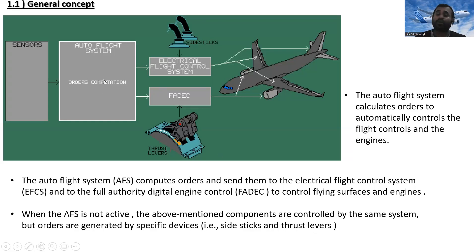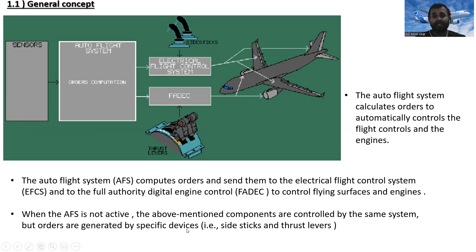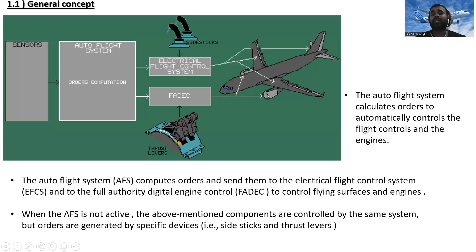If the auto flight system is not active, the flying surfaces and engines are still controlled by the same systems, but the orders are generated by specific devices. If the auto flight is not working, the pilot inputs via the thrust levers and side sticks — the orders from the thrust levers go to FADEC and then to the engines.